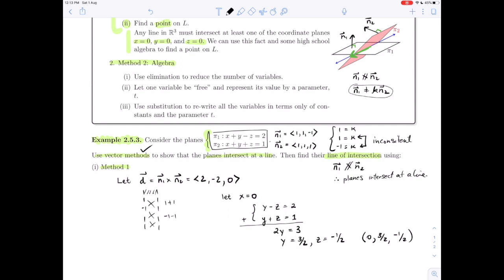Since I have a point on the line and a vector parallel to the line, I can give the equation of the line of intersection: (x, y, z) equals the position vector of the point we just found (0, 3/2, -1/2) plus t times the direction vector (2, -2, 0) for any t in R. So there is the answer.